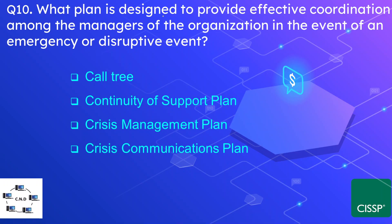Question number 10: What plan is designed to provide effective coordination among the managers of the organization in the event of an emergency or disruptive event? The options are call tree, continuity of support plan, crisis management plan, or crisis communication plan. The correct option is the crisis management plan, which also includes other plans such as the communication plan and the call tree.